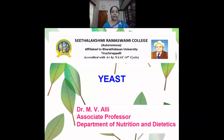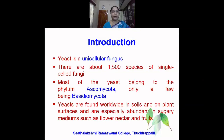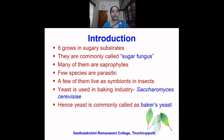Welcome students. In this session, let us see about the microorganism yeast. Yeast is a unicellular fungus. There are about 1500 species of single-cell fungi. Most of the yeast belong to the phylum Ascomycota, only a few being Basidiomycota. Yeast are found worldwide in soil, on plants, and they are abundantly found in sugary mediums such as the nectar present in flowers and also in fruits. Yeast grows in sugary substrates and therefore it is commonly called the sugar fungus.